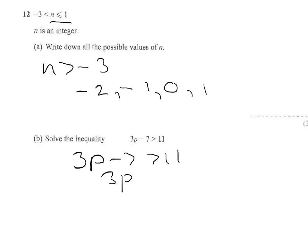So we move the minus 7 from the left-hand side. The minus 7 goes across the other side and becomes a plus 7, giving me 3p is greater than 11 plus 7. So that gives me 3p is greater than 18.